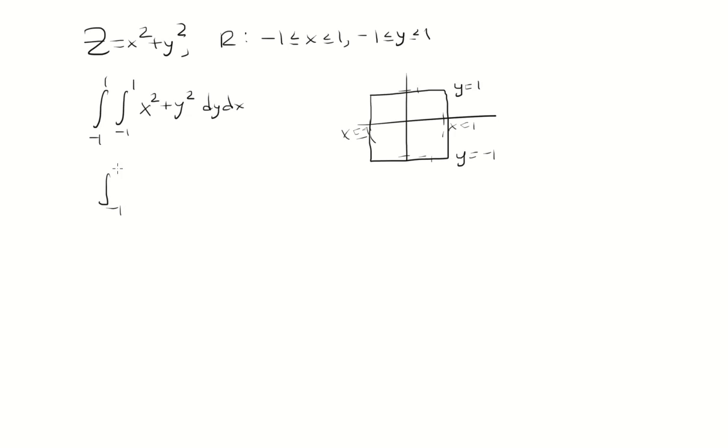So then we'll just integrate with respect to y. The antiderivative of x squared is x squared times y. Antiderivative of y squared is y cubed over 3, evaluating from y equals negative 1 to 1.